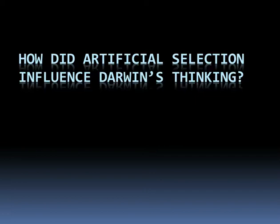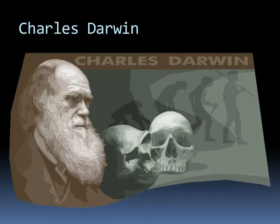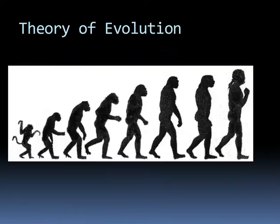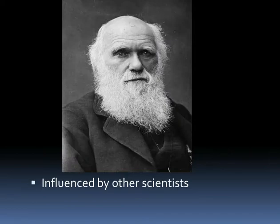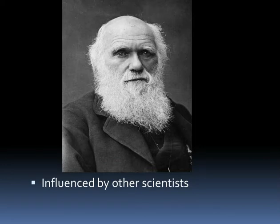How did artificial selection influence Darwin's thinking? Charles Darwin came up with the theory of evolution. His ideas were greatly influenced by other ideas and other scientists. One process that influenced Darwin was the process of artificial selection.